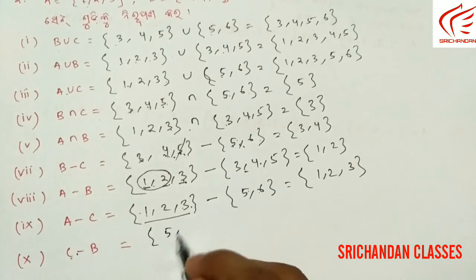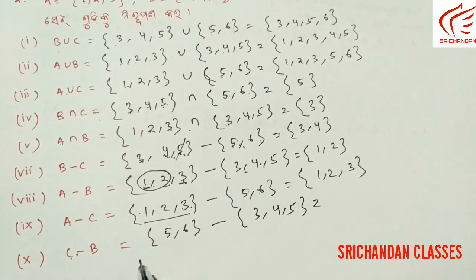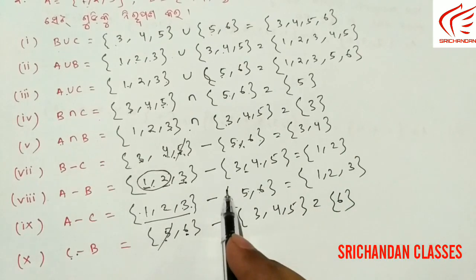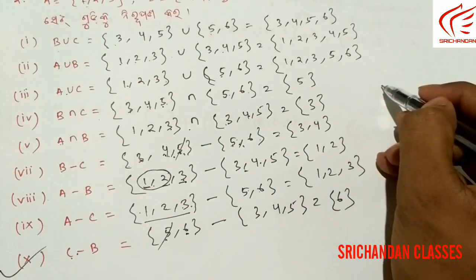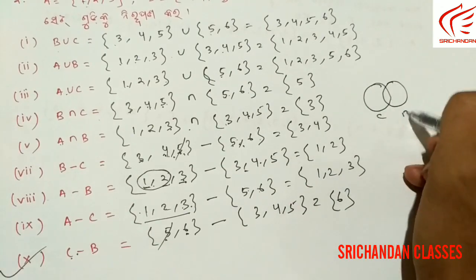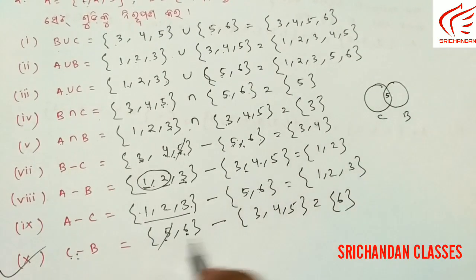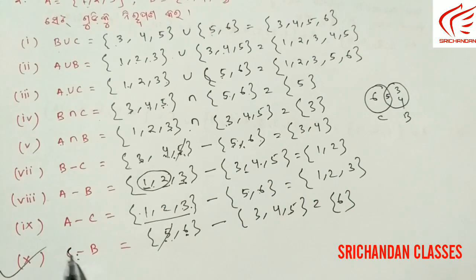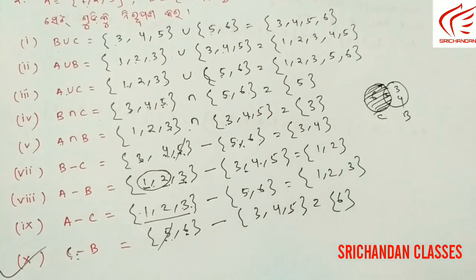Now C minus B: C = {5, 6} minus B = {3, 4, 5}. Elements in C that are not in B: 5 is in B so cancel it. 6 is not in B, so it remains. Method: 85 (element 5) is cancelled, 86 (element 6) remains. So C-B = {6}.